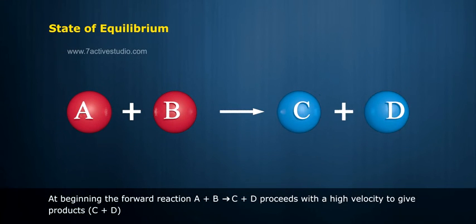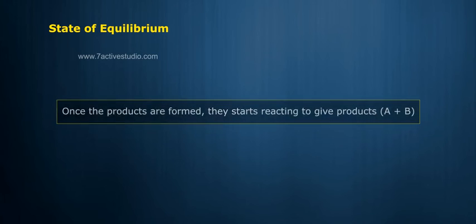At the beginning, the forward reaction A plus B leads to C plus D proceeds with high velocity to give products C plus D. Once the products are formed, they start reacting to give products A plus B.